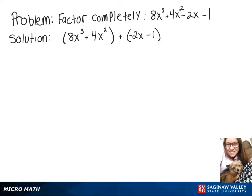Now we want to find a common factor in each of these groups. In our first group, we can factor out 4x² and be left with 2x + 1. In our second group, we can actually just factor out a negative 1, so we'd have -(2x + 1).